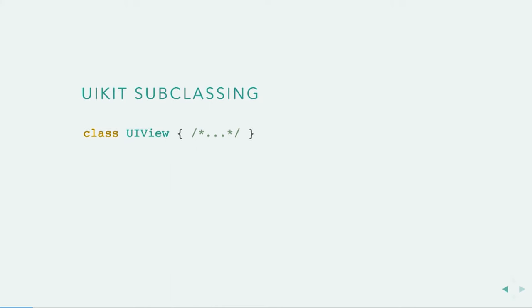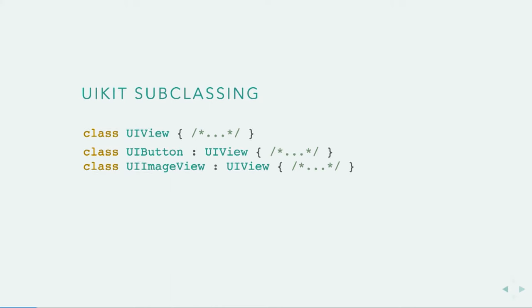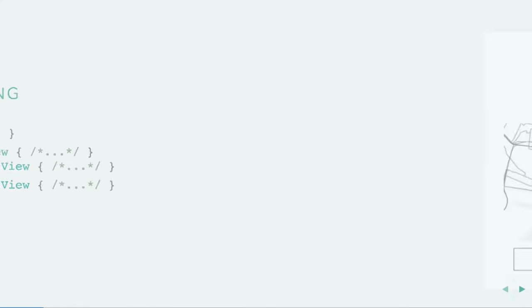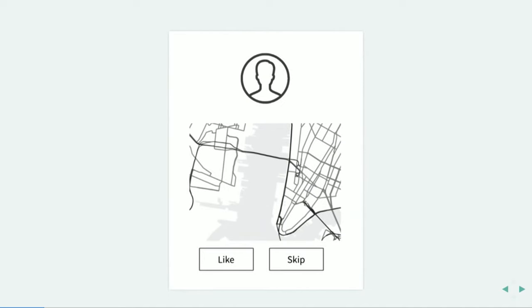In UIKit, everything is a UIView — at least it descends from it. So UIButtons are UIView, UIImageViews are UIView, UITextViews are UIView, UIStackViews are UIView, UITableView. And this is good, because we can use these things together and build something.